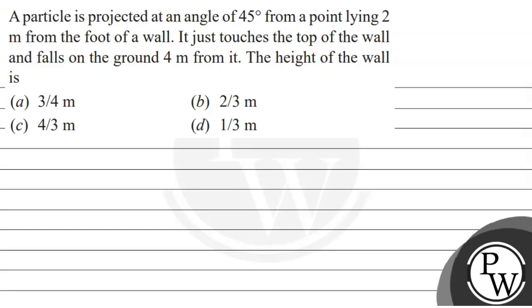Let's read this question. A particle is projected at an angle of 45 degrees from a point lying 2 meters from the foot of a wall. It just touches the top of the wall and falls on the ground 4 meters from it. The height of the wall is: options are 3/4 meter, 2/3 meter, 4/3 meter, 1/3 meter. We have to choose the correct option.